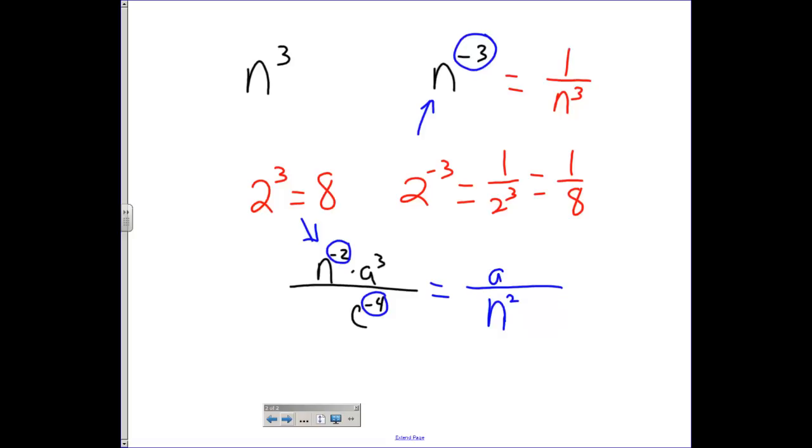Then I'm going to bump the a to the third over. I don't change that one because it's already got a positive 3. But if I want to change this one back into a positive exponent, I simply bring it up to the top. So the reciprocal of that would be put it in the numerator.